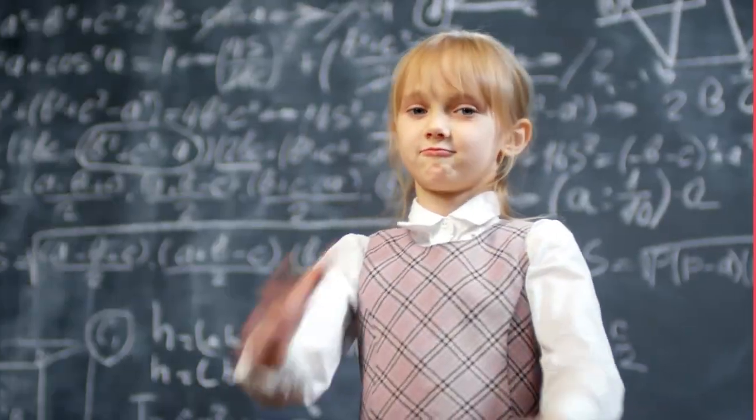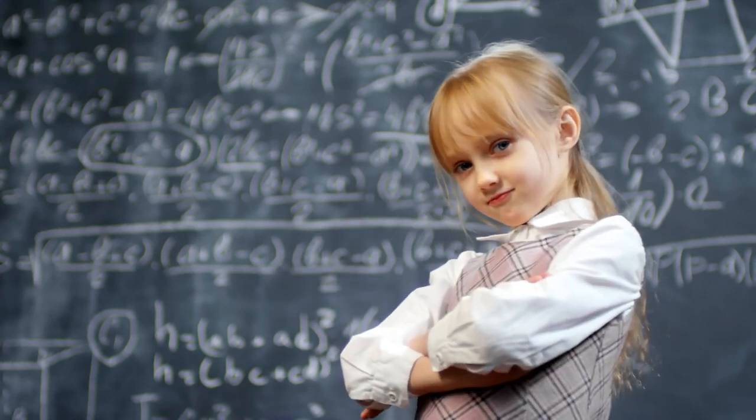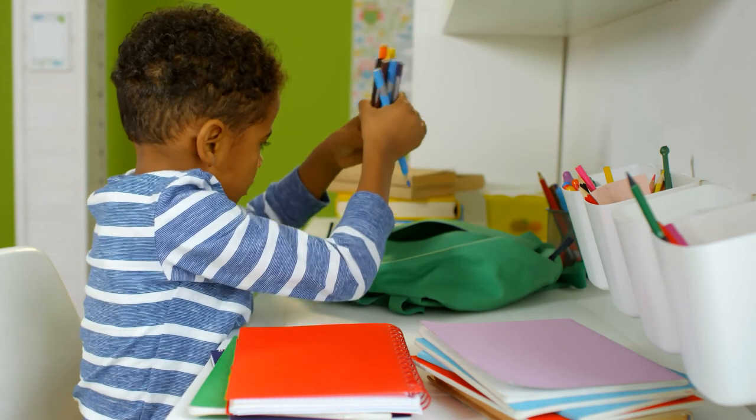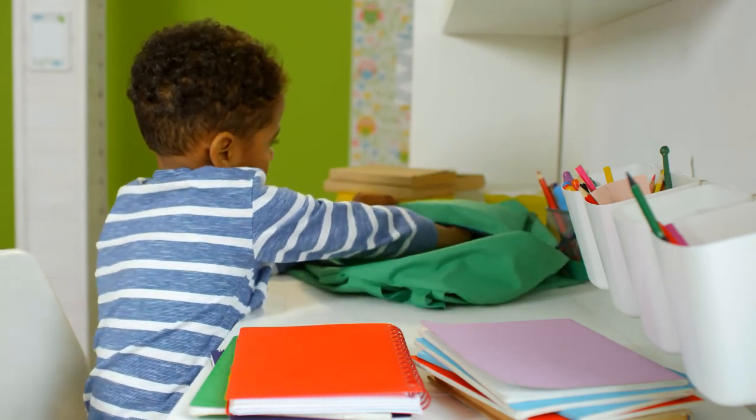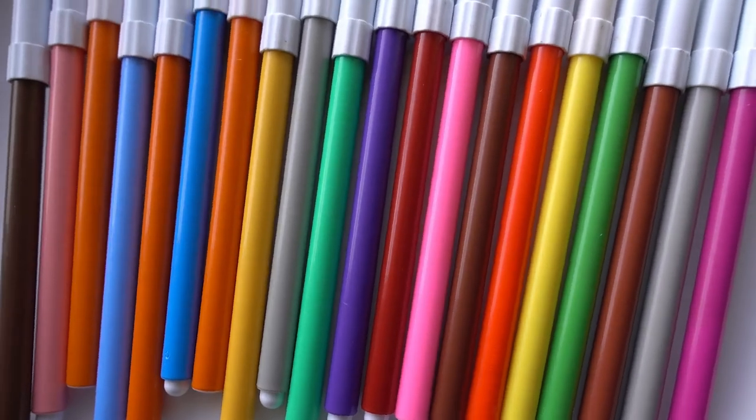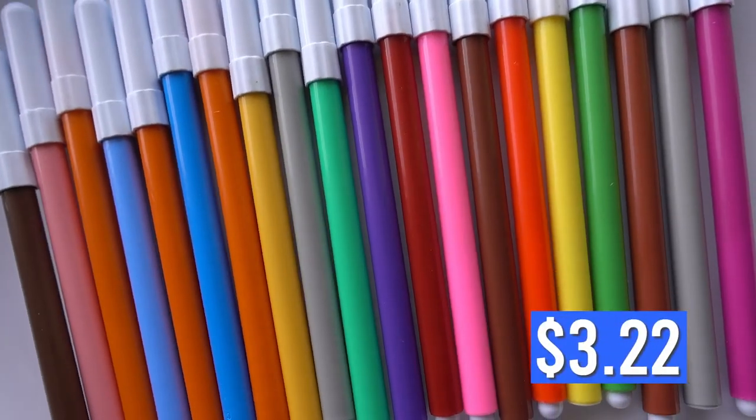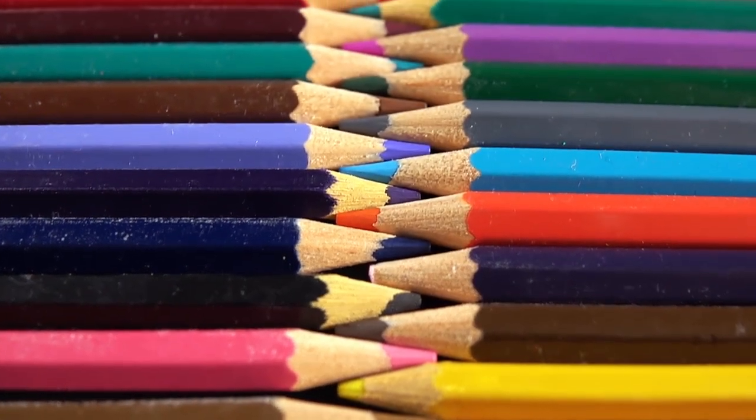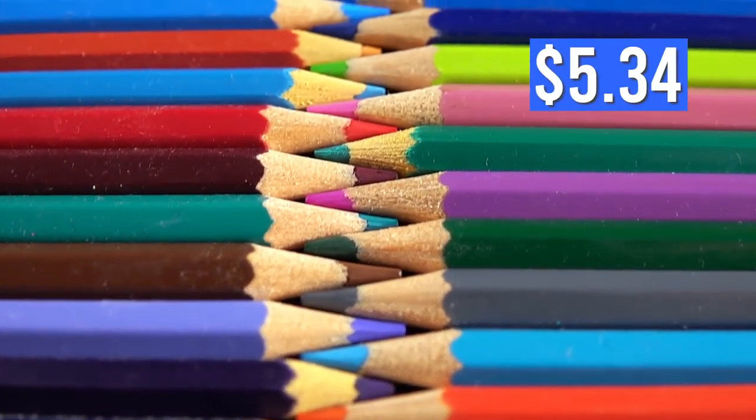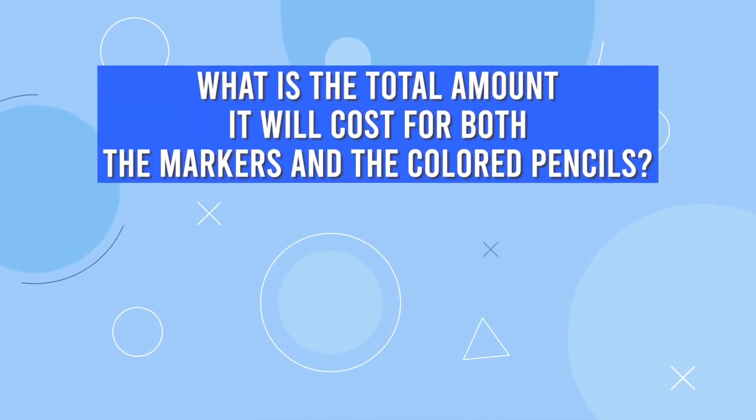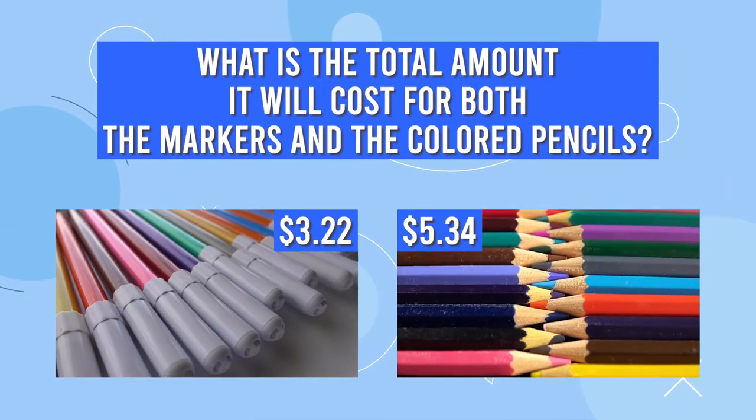Now, let's see if you can solve a money word problem on your own. When you look into your backpack, you realize that you are running low on school supplies. So, you go to the store and purchase a new set of markers for $3.22, and a new set of colored pencils for $5.34. What is the total amount it will cost for both the markers and the colored pencils?